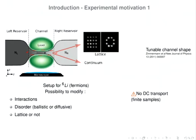What they did is to engineer a gas of fermions creating two reservoirs connected by a small conduction channel or junction. With cold atoms you can tune interaction strength, play with the transport regime—making it ballistic or diffusive by imposing a speckled potential—and include the effect of an optical lattice. Importantly, you cannot observe real DC transport since you have finite reservoirs with a finite number of particles, so transport must be observed as a transient effect, not a DC effect.